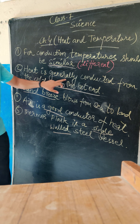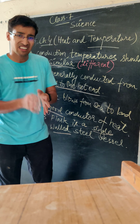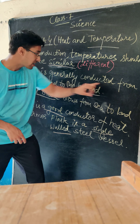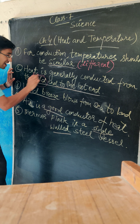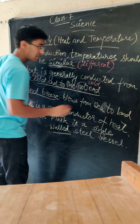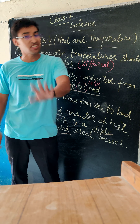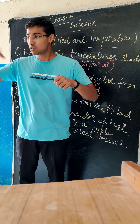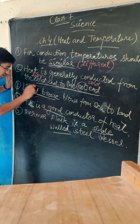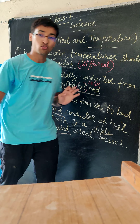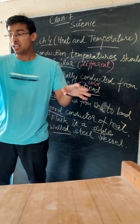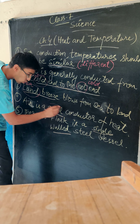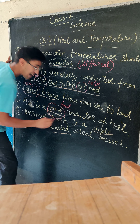Point number 2: Heat is generally conducted from the hot end to the cold end — not from the cold end to the hot end. Point 3: Land breeze blows from the land to the sea. Sea breeze blows from the sea to the land. Land is a good conductor of heat; air is a bad conductor of heat.